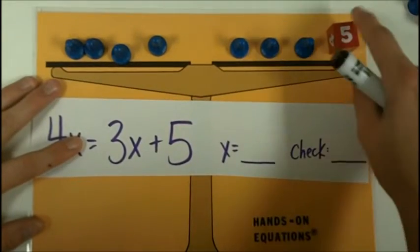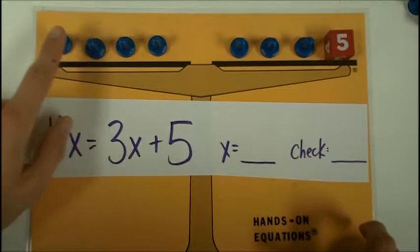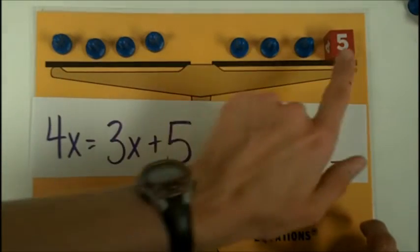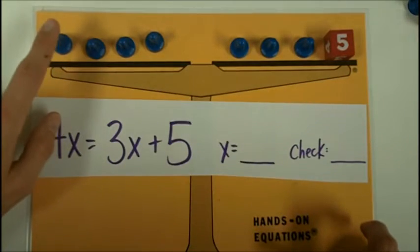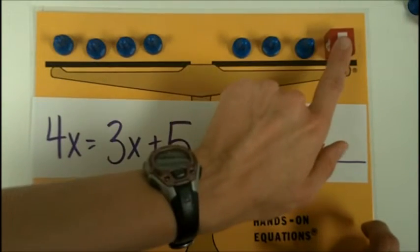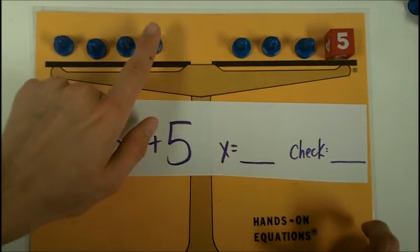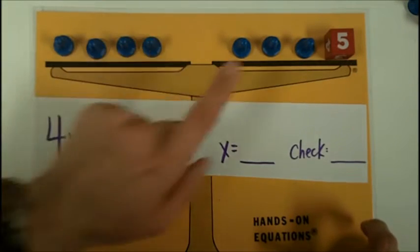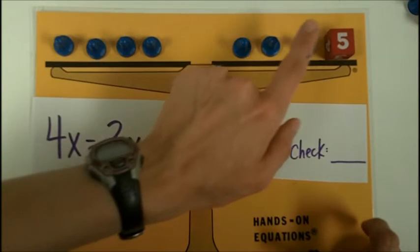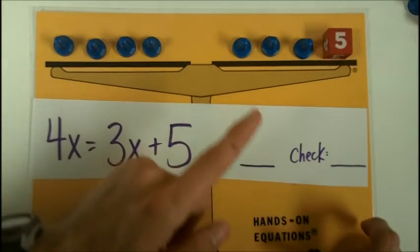All right, now I'm ready to check. I would immediately see that ones are too small again because that's going to be four over here and eight. Let's try two. Two, four, six, eight. Two, four, six. That's too many. Let's try three. Three, six, nine, twelve. Over here on this side. Three, six, nine plus five is fourteen. Doesn't work.